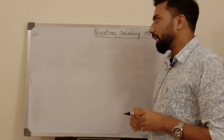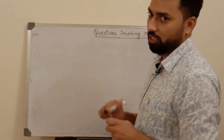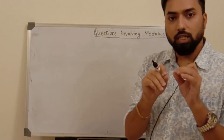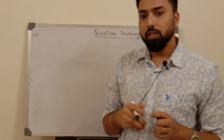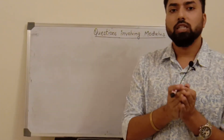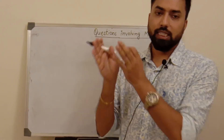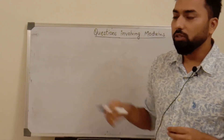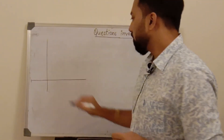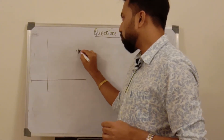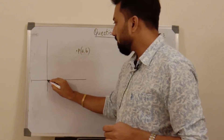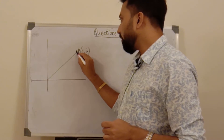Let us start with the concept of modulus of a complex number. We will take the Argand plane. In the Argand plane, a complex number can be represented as a point — there exists a one-to-one correspondence between the numbers of the complex number system and the points of the Argand plane. If we take a point P with coordinates (a, b)...